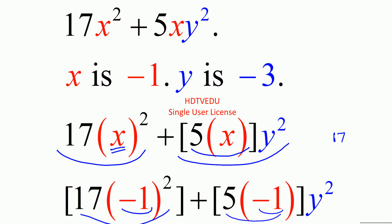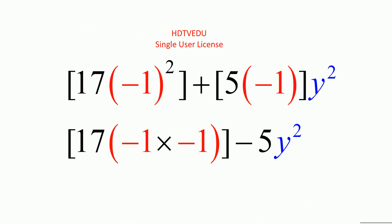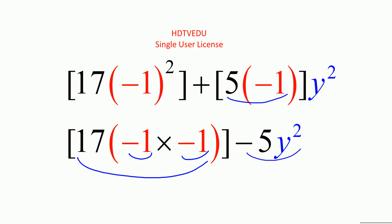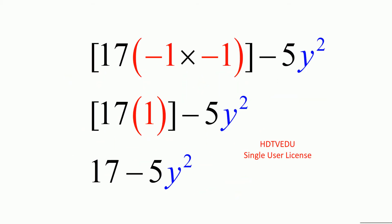Negative 5. So you get 17 minus 5y squared. Negative 1 times negative 1 is positive 1, and positive 1 times 17 is 17. Then 5 times negative 1 is negative 5, so you have negative 5y squared, giving us 17 minus 5y squared. Now what do we do?